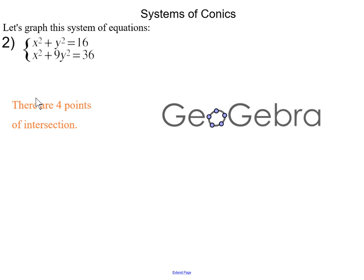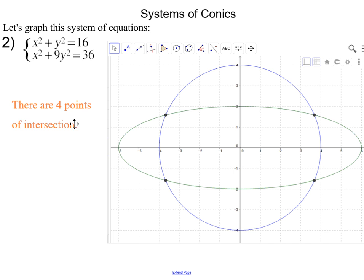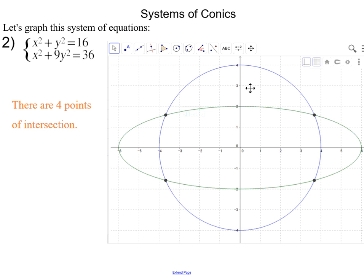Once we graph these two equations, we notice four intersection points. The blue graph is our circle (first equation), and the green graph is our ellipse (second equation). The circle is centered at the origin with radius 4, and the ellipse is also centered at the origin with a horizontal major axis of 12 and a minor axis of length 4.